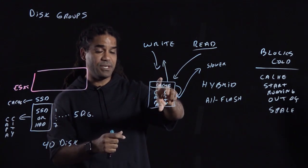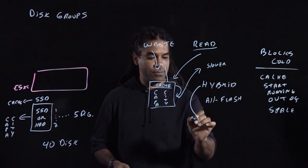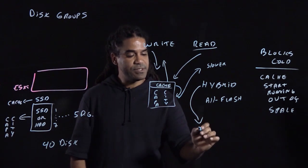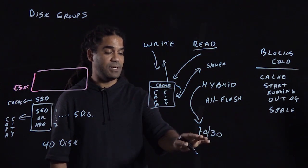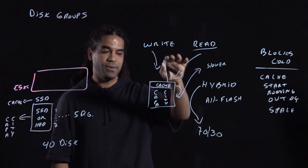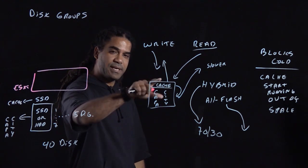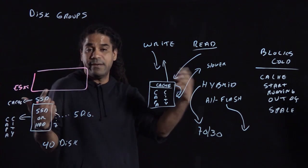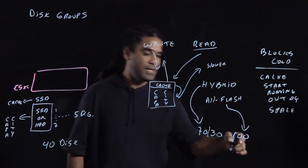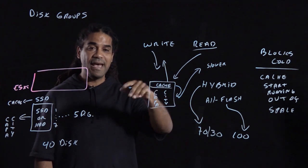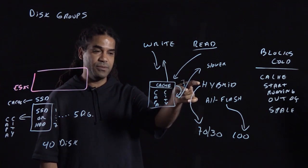Because of that, there is a design decision that was made for the disk group and the cache. When you have a hybrid solution, the cache by default is going to be split 70-30, so 70% of the space in the cache is reserved for reading, and 30% of the space for the cache is reserved for writing. On the all-flash, since there is no need to copy the blocks back to the cache, I mean this is SSD anyway, so they are reading fast regardless, there is no 70-30. It's 100% write only at the cache tier. That's the difference from a performance perspective between a hybrid solution and an all-flash.